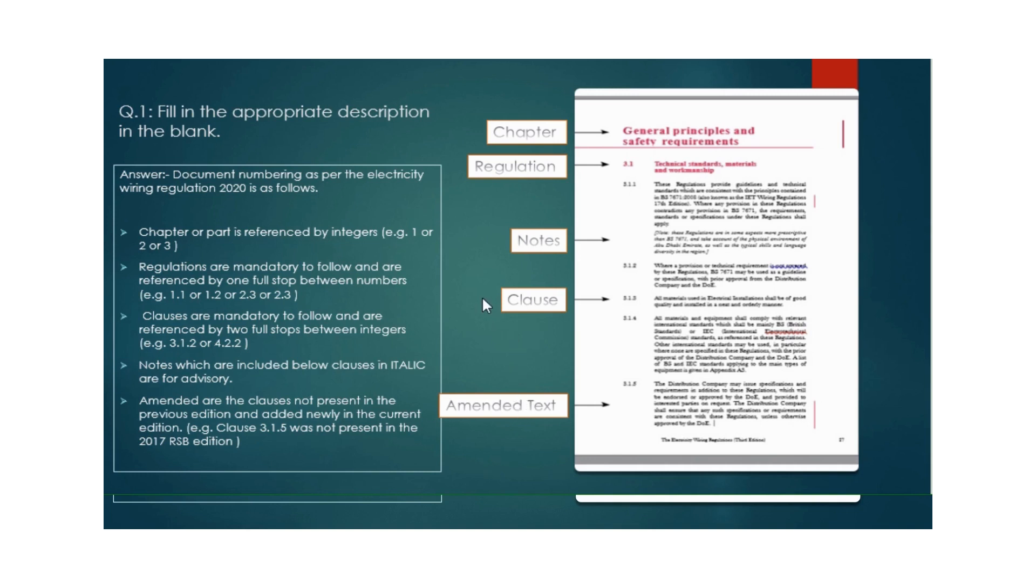Chapters are usually represented by integers 1, 2, or 3. Regulations are mandatory and represented by one full stop between two integers. Clauses are also mandatory and represented by two full stops between three integers. Notes are written in italic for information only, and amendment text is text not mentioned in the previous 2014 edition but mentioned in the current edition.